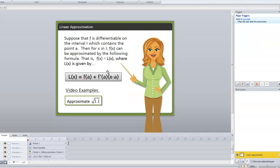This is the definition you just saw on the slide and that Elizabeth went over in her video. It says suppose that F, some function, is differentiable on an interval I, which contains the point A. Then for X in that interval, F of X can be approximated by the following formula. This is our linear approximation formula. We're trying to approximate some function F of X. This is the approximation L of X that we're using to do that.